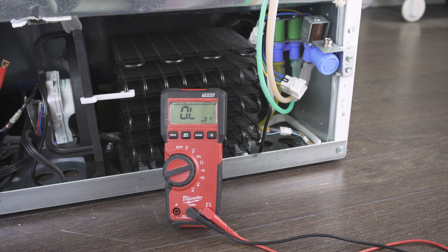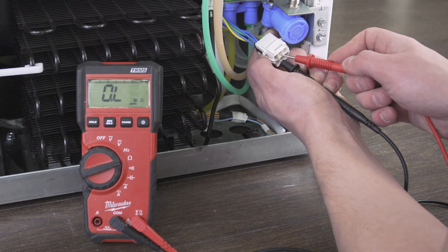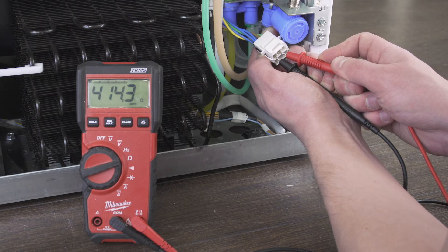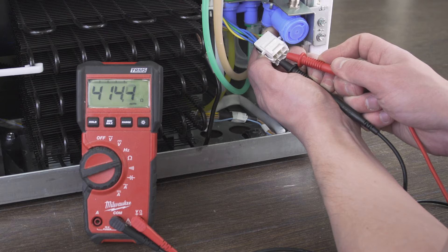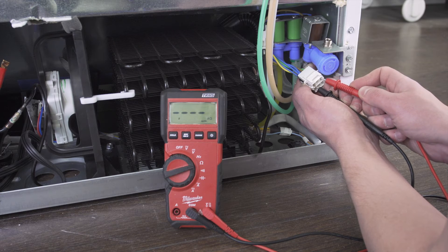Set the multimeter to the ohms or resistance setting. Trace the wires to the connector. Now touch the probes to both terminals. There should be continuity with a resistance reading between 100 and 500 ohms. Repeat the test for each solenoid.